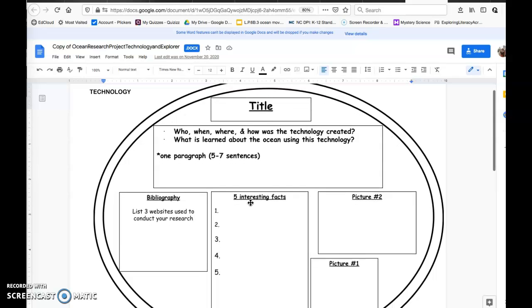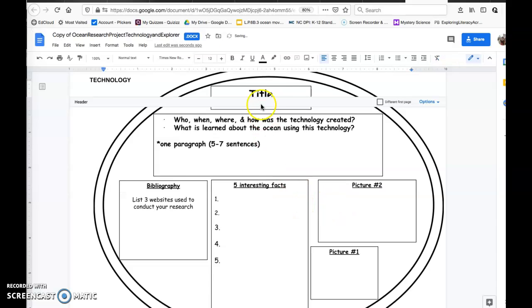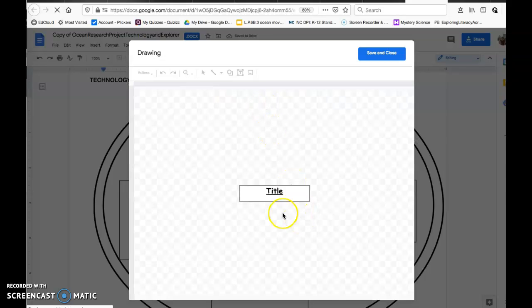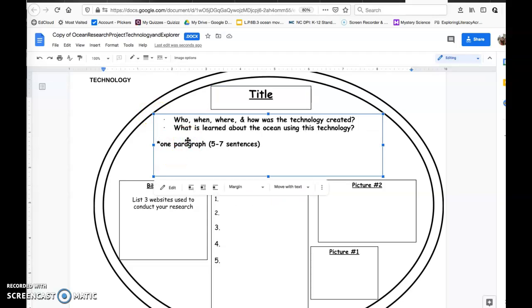This is the technology part. You're going to pick a technology. You're going to edit this right here. I'm going to continue editing. You're going to put the title of your technology, and so forth. I want to know who, when, where, and how this technology was created. What did we learn about the ocean from using this technology? This is going to be in paragraph form. So that means five to seven sentences people. Capitalized words and punctuation is expected.